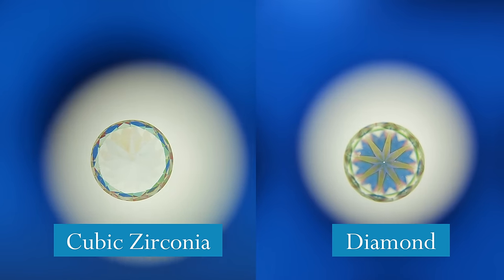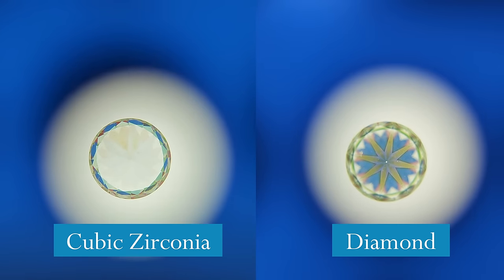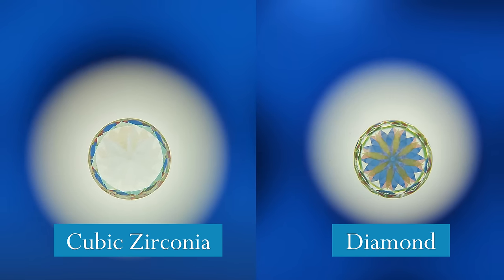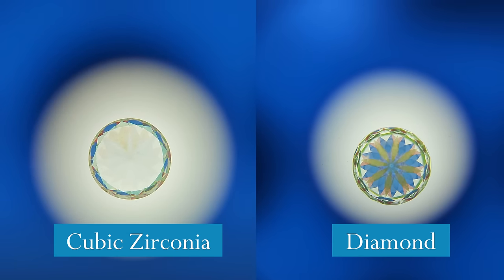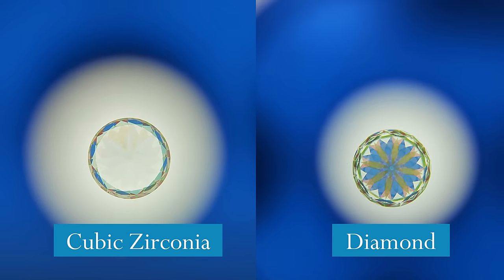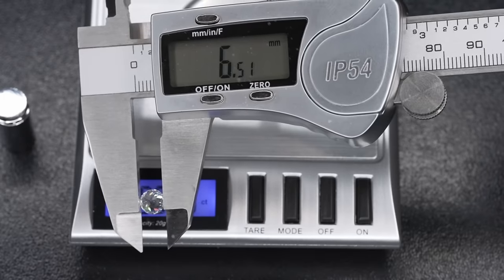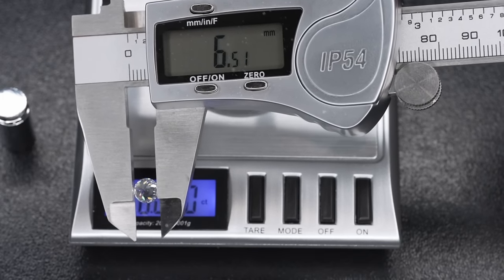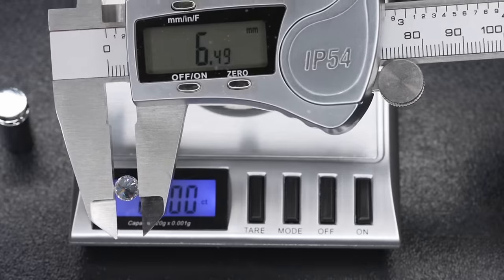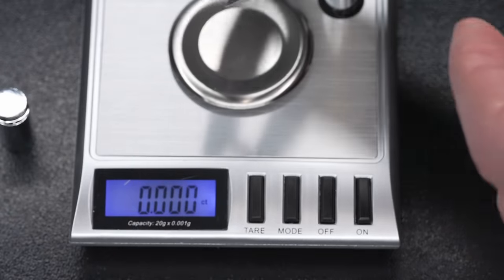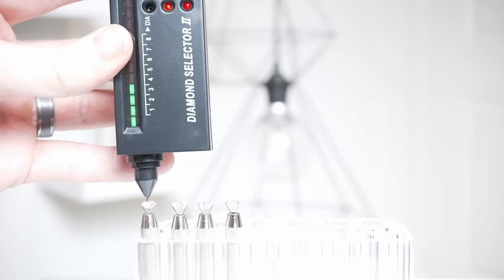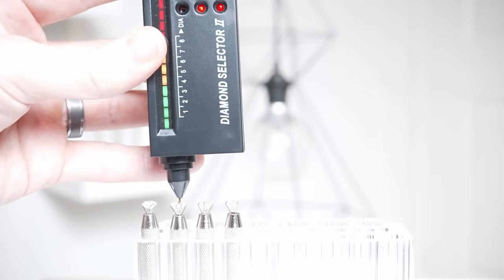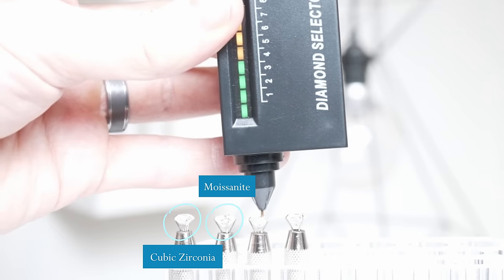To make it even more obvious, when the cubic zirconia is face down under the asset scope, you can see right through it — cubic zirconia doesn't really refract light, it just shines light through it. The cubic zirconia is on the left and the diamond is on the right, face down. Also, the diameter of the cubic zirconia is 6.5mm, which should be around one carat if it were a natural diamond, but this stone weighs almost two carats — making it more and more obvious this is a cubic zirconia. Interestingly, diamond testers can actually detect that this is not a diamond.